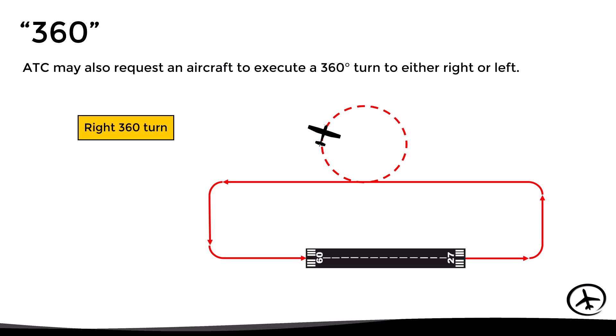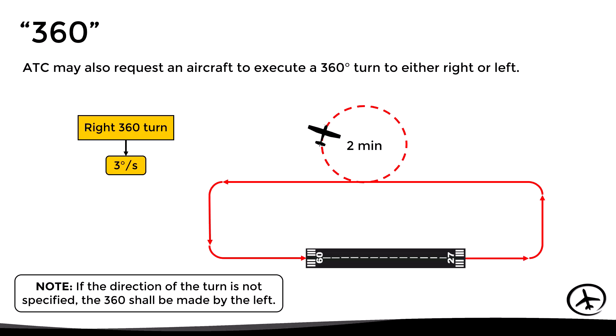Another common procedure is to make a 360, which consists of making a 360-degree turn at a standard rate of turn of three degrees per second — meaning the whole maneuver should take about two minutes. Normally ATC will indicate the direction of the turn; however, if this is not specified, the standard 360 is made to the left.